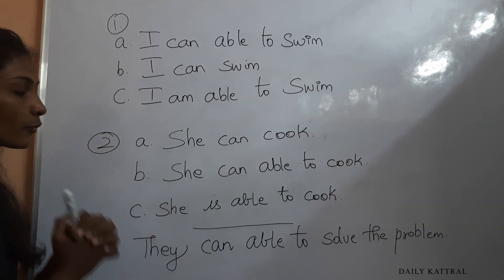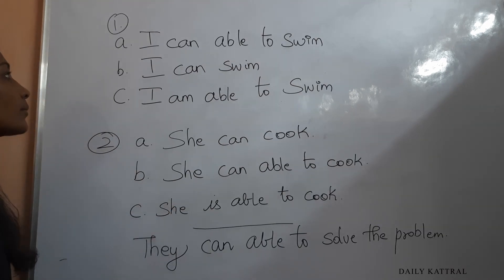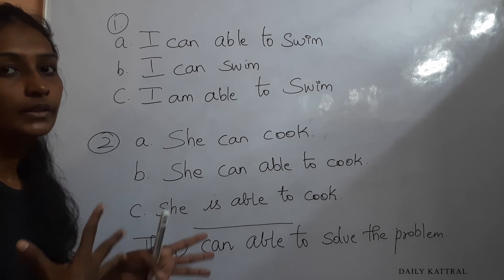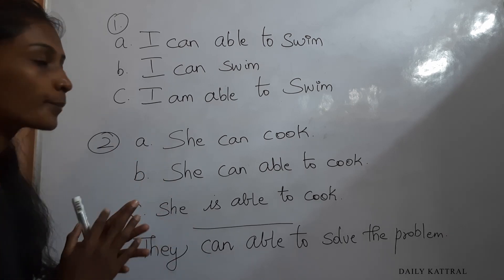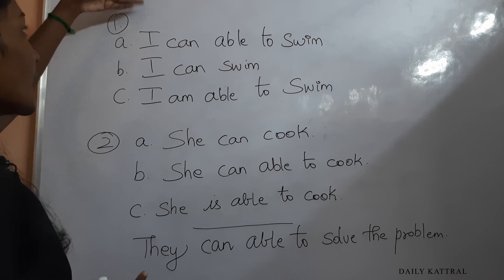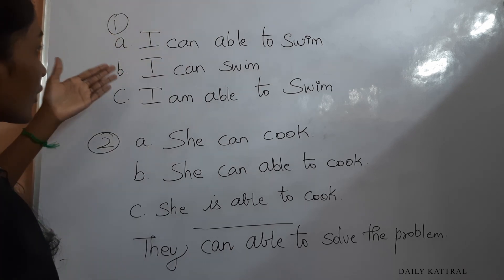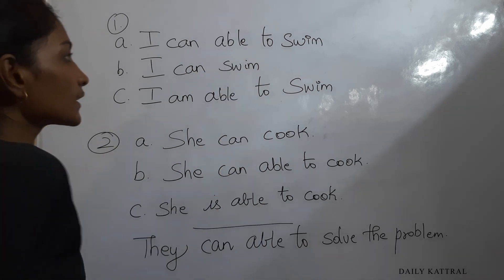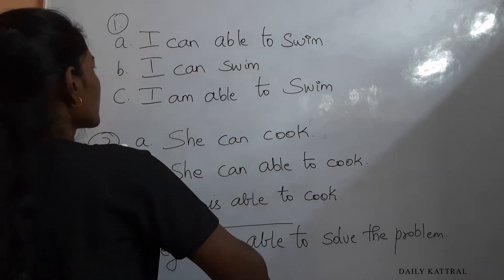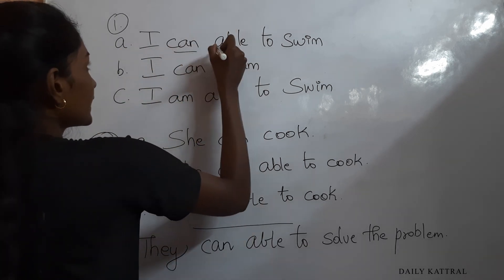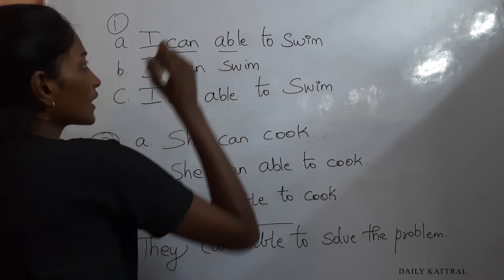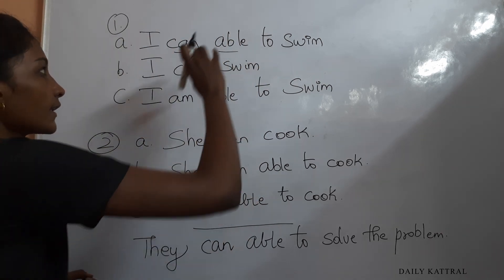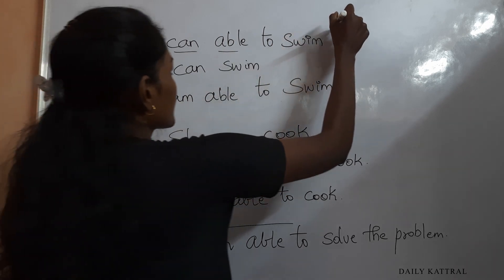Now we have two questions with three options each. First question: Option one — 'I can able to swim.' Option two — 'I can swim.' Option three — 'I am able to swim.' Option one is a mistake because 'can' and 'able' are both used together in one sentence.